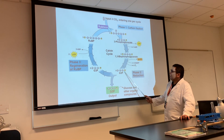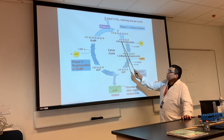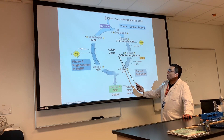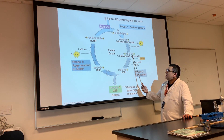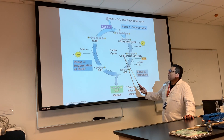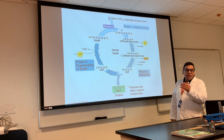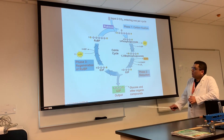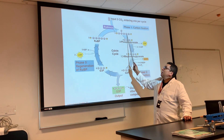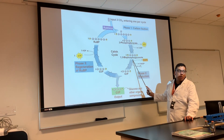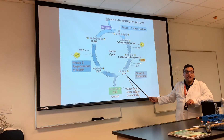The next phase is reduction of the 1,3-bisphosphoglycerate. When you add a phosphate to 3PG, it becomes 1,3-bisphosphoglycerate. One means the first carbon has a phosphate; three means the third carbon has a phosphate. Because there are two phosphates, that's the 'bis' — two phosphates on a glycerate. Then when you add electrons and hydrogen to this, it becomes glyceraldehyde 3-phosphate, or G3P.